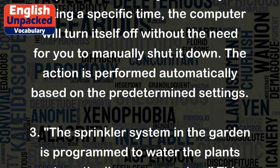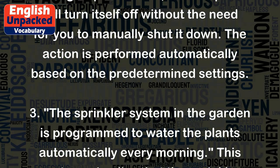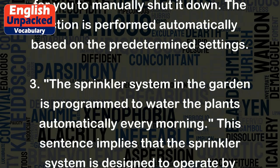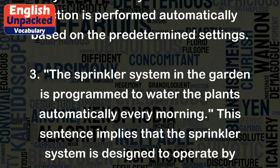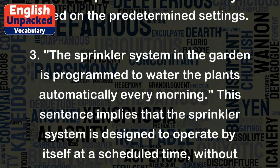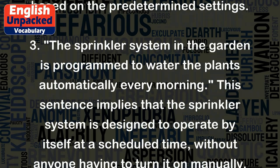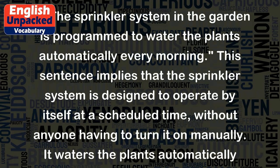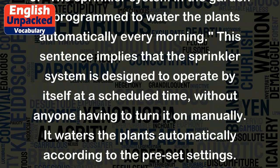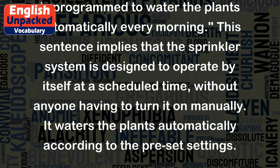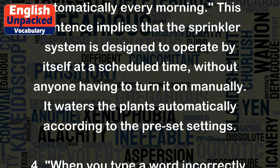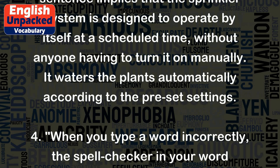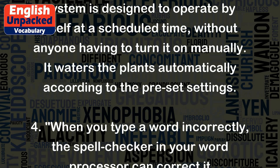Example 3: The sprinkler system in the garden is programmed to water the plants automatically every morning. The sprinkler system is designed to operate by itself at a scheduled time, without anyone having to turn it on manually. It waters the plants automatically according to the preset settings.